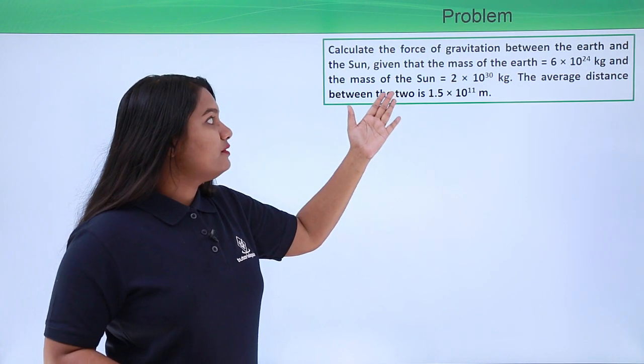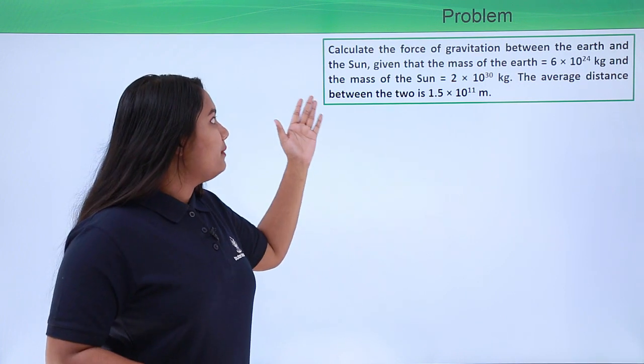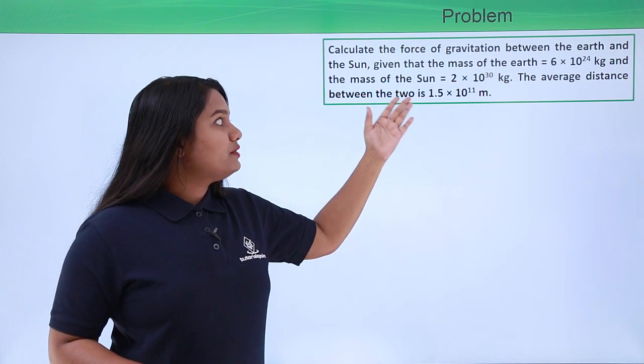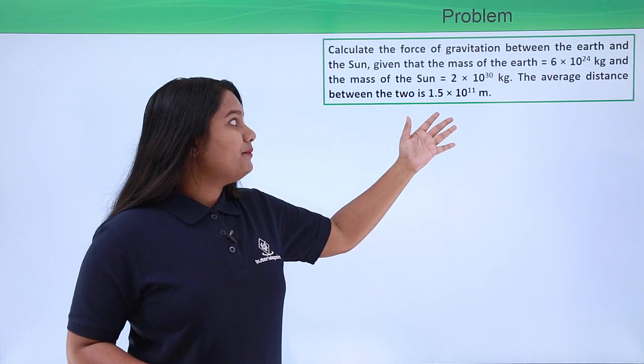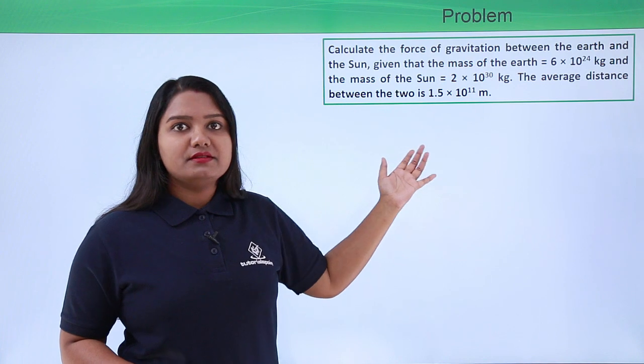Given that the mass of the Earth is 6 × 10^24 kg and the mass of the Sun is 2 × 10^30 kg, the average distance between the two is 1.5 × 10^11 meters.